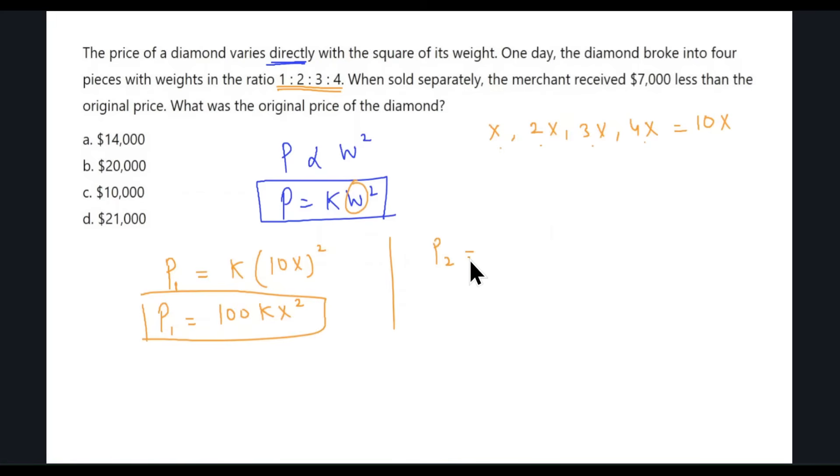The final price will be the sum of the individual weights. So it will be KX squared plus K times 2X squared, plus K times 3X squared, plus K times 4X squared. KX squared is taken as a factor, so we are left with 1 plus 4 plus 9 plus 16. If we add all of this, we get 30.